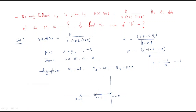The centroid is at −1. From this centroid point, the three asymptotes go out at 60°, 180°, and 300°.